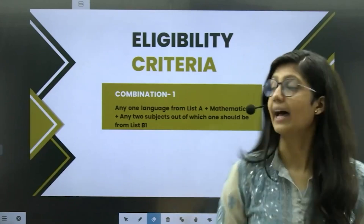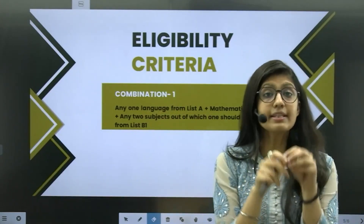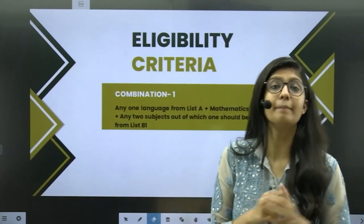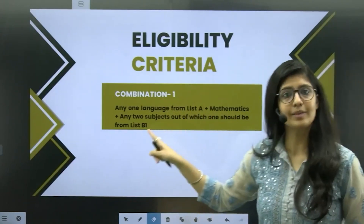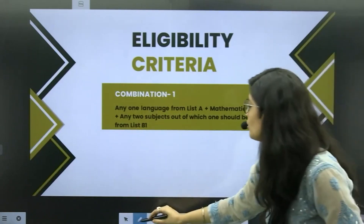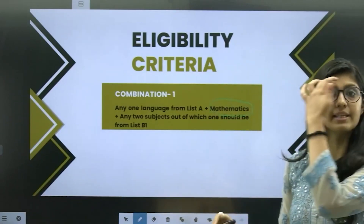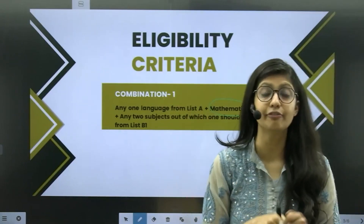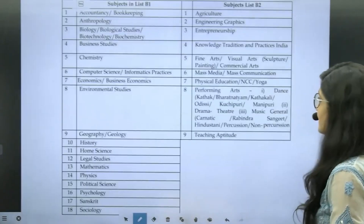The eligibility criteria says that you need to have any one language from LISTE A. This combination you need to fill in your CUET examination in order to be eligible for B.Sc. You need to have any one language from LISTE A — I will be showing you LISTE A and LISTE B in a couple of seconds. Next, you should have Mathematics, which is compulsory. Next, any two subjects, out of which one should be from LISTE B1. Now let us see what LISTE A and LISTE B have in store.